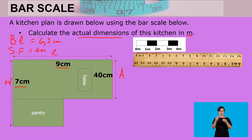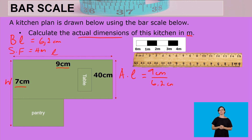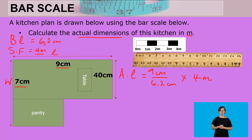For the actual length, we say: actual length equals the measured length divided by the balance, multiplied by the scale factor. The measured length is 9 centimeters, divided by the balance of 6.2 centimeters, multiplied by the scale factor of 4 meters. Let's calculate 9 divided by 6.2 together on the calculator.